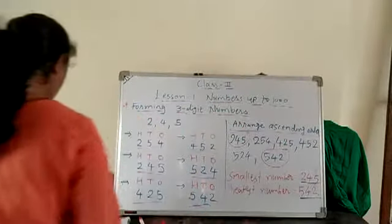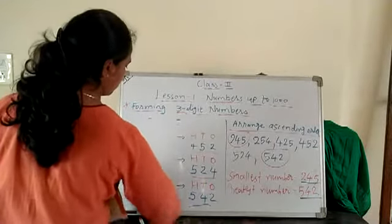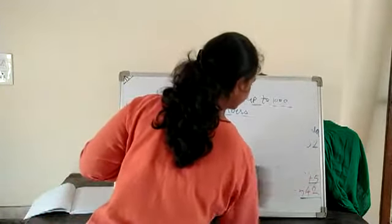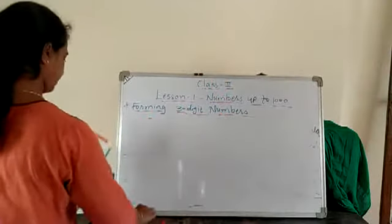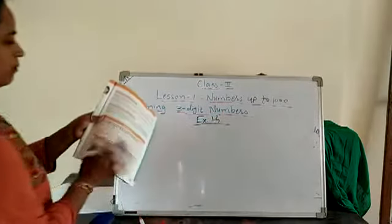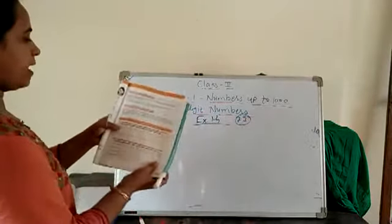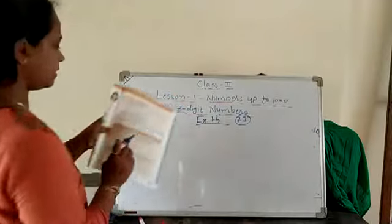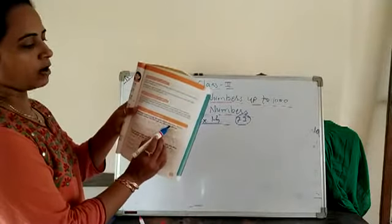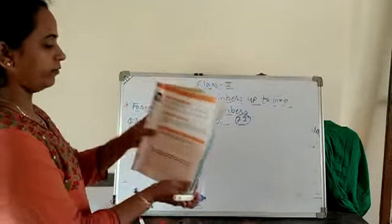Now in your textbook, open page number 73, exercise 1.4. Question 1: Form 2-digit numbers using the given digits, only once. Tick the smallest number. The first one has been done for you.